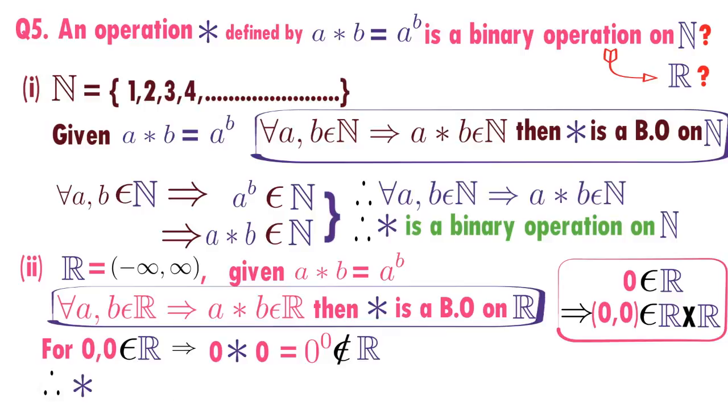That means for every A comma B belongs to R, A star B does not belong to R. Therefore, we can conclude that star is not a binary operation on set of real numbers.